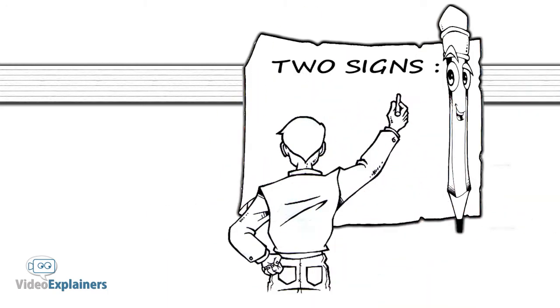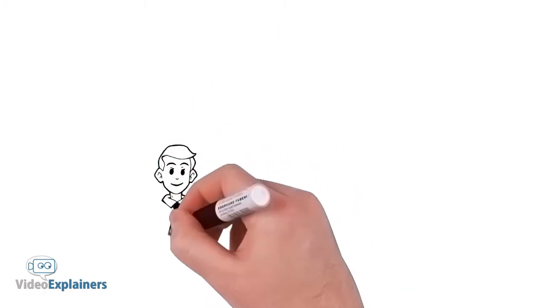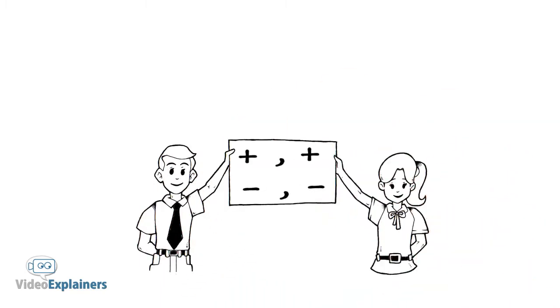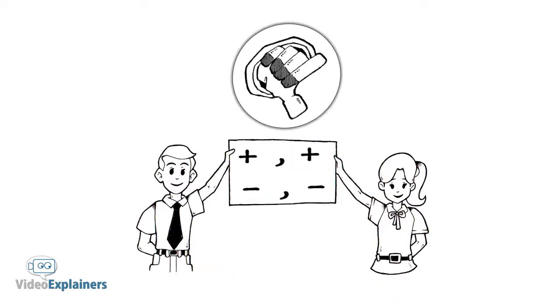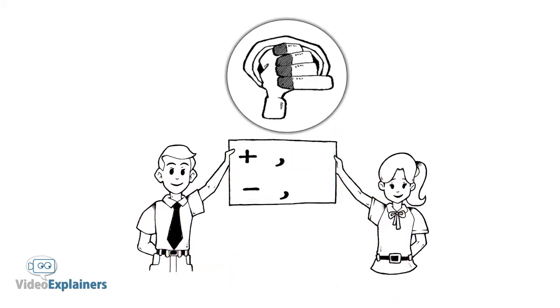Two signs. The rules. Two like signs make a positive sign. Two unlike signs make a negative sign.